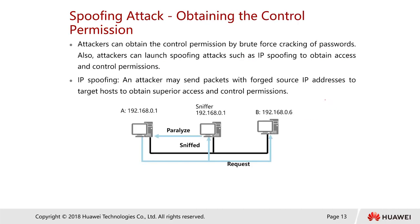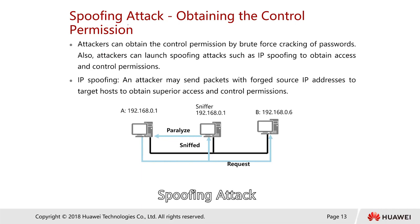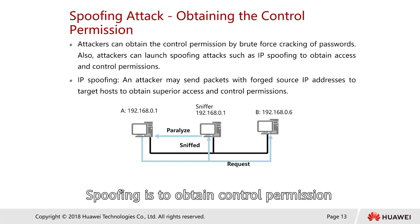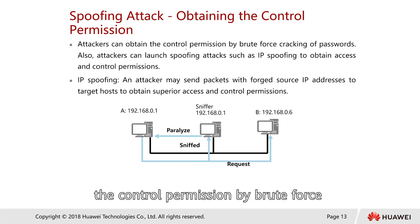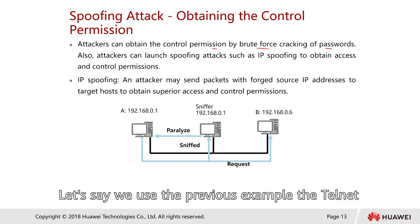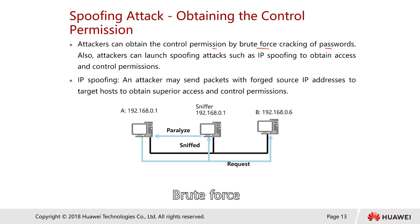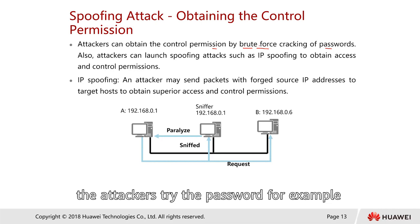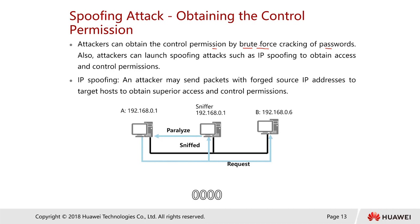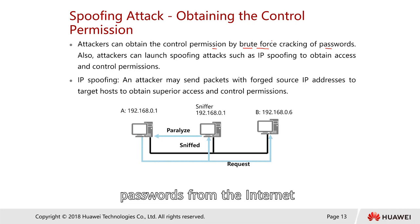After that, the attacker can determine whether the host uses a port for providing certain services, especially Telnet as mentioned earlier. The next type of attack is the spoofing attack. To obtain control permission, an attacker can use brute force cracking of passwords. For example, with Telnet on IoT devices, the attacker tries passwords starting from 0000, then 0001, 0002, 0003, and so forth.